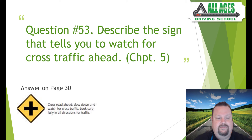Question number fifty-three: describe the sign that tells you to watch out for cross traffic ahead. This was seen in an earlier question — it's a yellow diamond-shaped hazard warning sign found on page 30. It means crossroad ahead: slow down, watch for cross traffic, and look carefully in all directions.